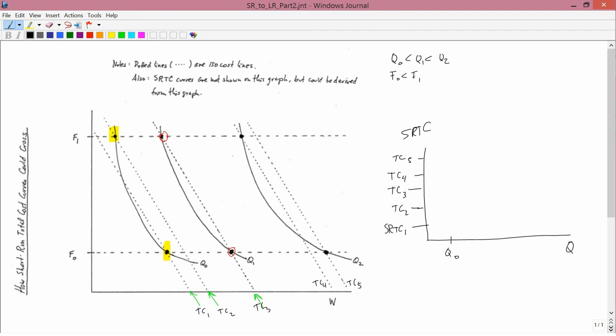So for Q0, the cheapest way was, you know, you could get TC1. For Q1, it was TC3.